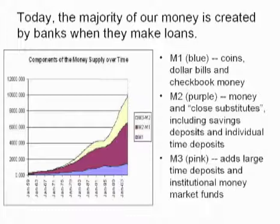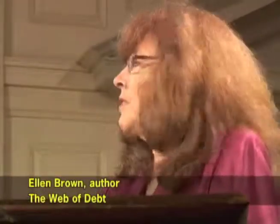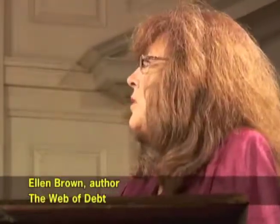Most of our money is created by banks in the form of loans. I'm using this chart because, even though it only goes up to 2007 — that's when the Fed quit reporting M3, which is the largest measure of the money supply — it includes the shadow banking system, which is very obscure.